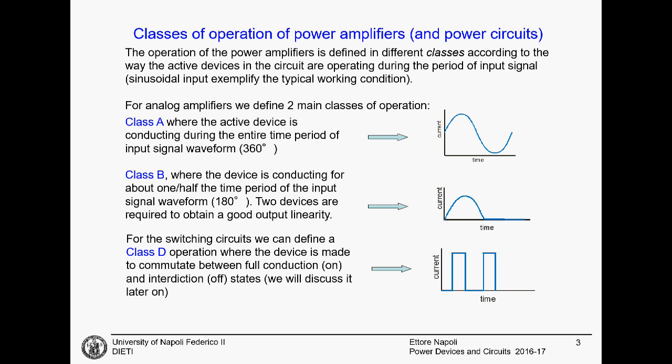These circuits are classified with letters, and the first that you study is the class A amplifier. In a class A amplifier, the active device — in general there is only one active device — is always conducting current during the entire period of the input signal. If you have a sinusoidal input signal, the current that flows through the active device is always larger than zero. This means the active device is always dissipating some power.